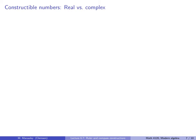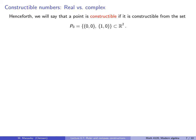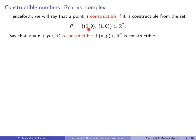Now we need to formalize what it means for a real or complex number to be constructible. Henceforth, we will say that a point in R² or the complex plane is constructible if it is constructible from the set of two points {(0,0), (1,0)} in R². We will also say that a complex number Z = x + yi is constructible if the point (x, y) is constructible in R² from that set. It's not clear a priori that this is a field, but this is something that we will show.